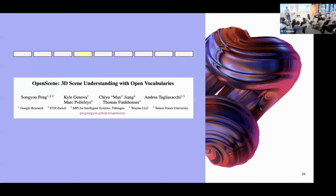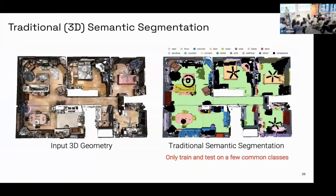OpenScene: 3D Scene Understanding with Open Vocabularies. Traditional 3D semantic segmentation works with a supervised learning algorithm mapping every pixel to a fixed set of target classes — limiting if you want to detect objects outside that class set. Open vocabulary segmentation is a general trend: people are using models like CLIP to bootstrap open vocabulary semantic segmentation without fixed class sets.